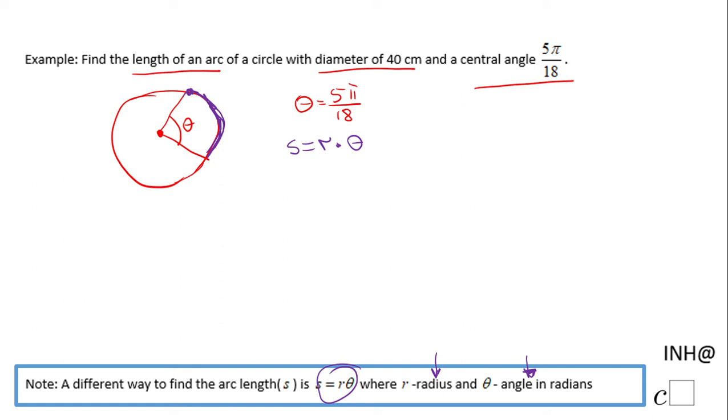The radius is half of the diameter. In our case, the diameter is 40, so half of 40 is 20. That is the radius of this circle. The θ is given to us as 5π/18, the central angle.